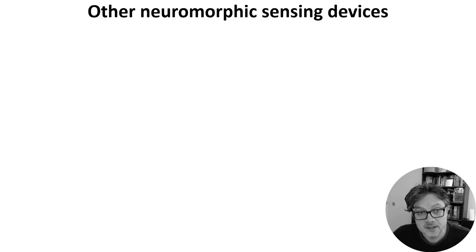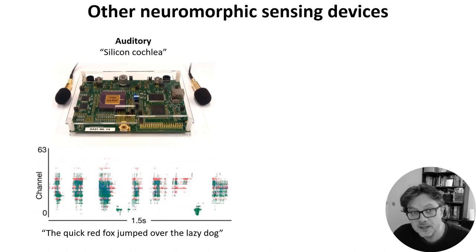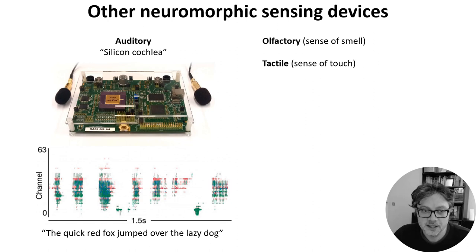Vision isn't the only sensor that has a corresponding neuromorphic version. There are auditory sensors — you can see here some of the spikes produced by this system — and there are also olfactory sensors, the sense of smell, and tactile sensors, the sense of touch.